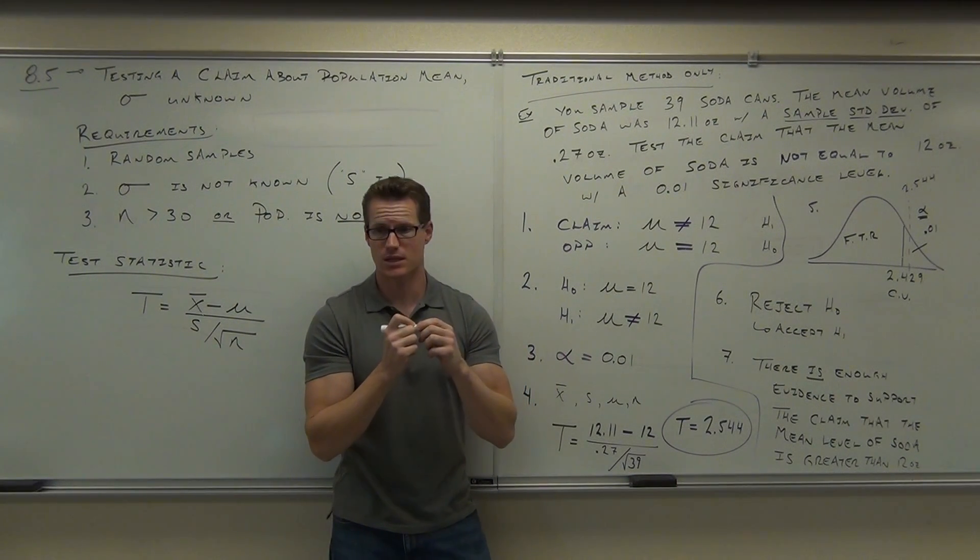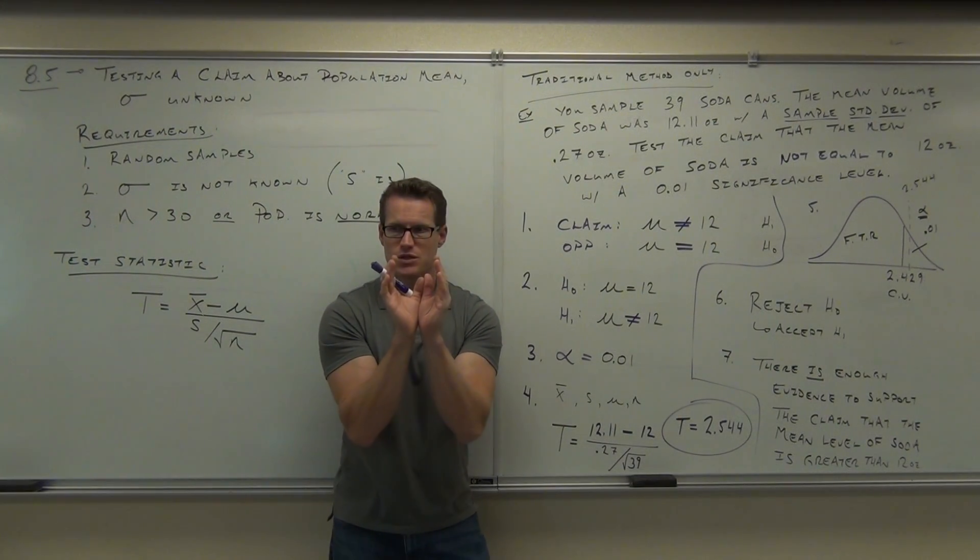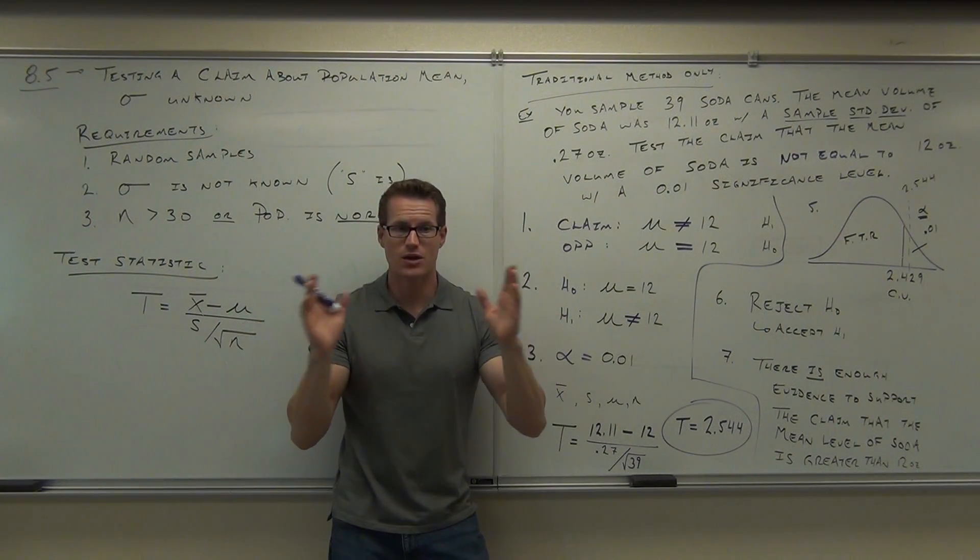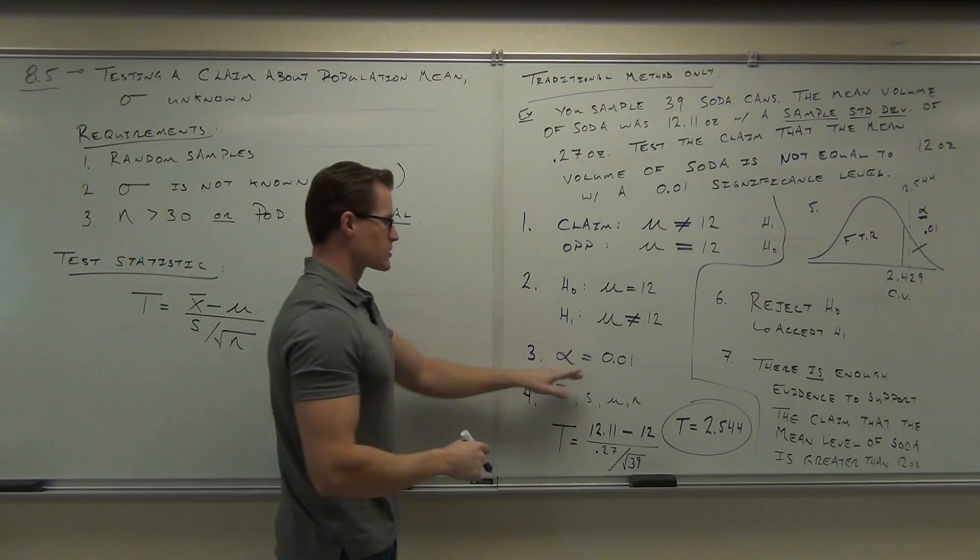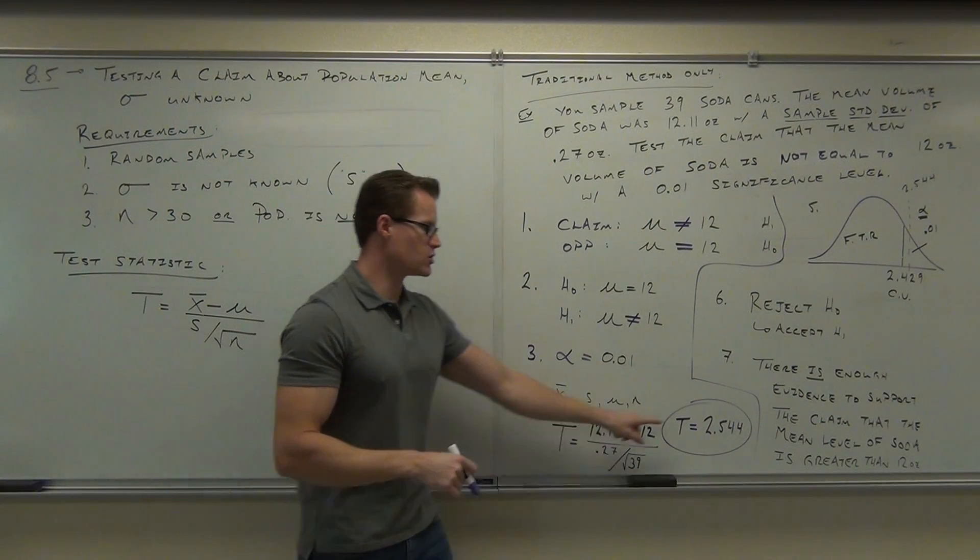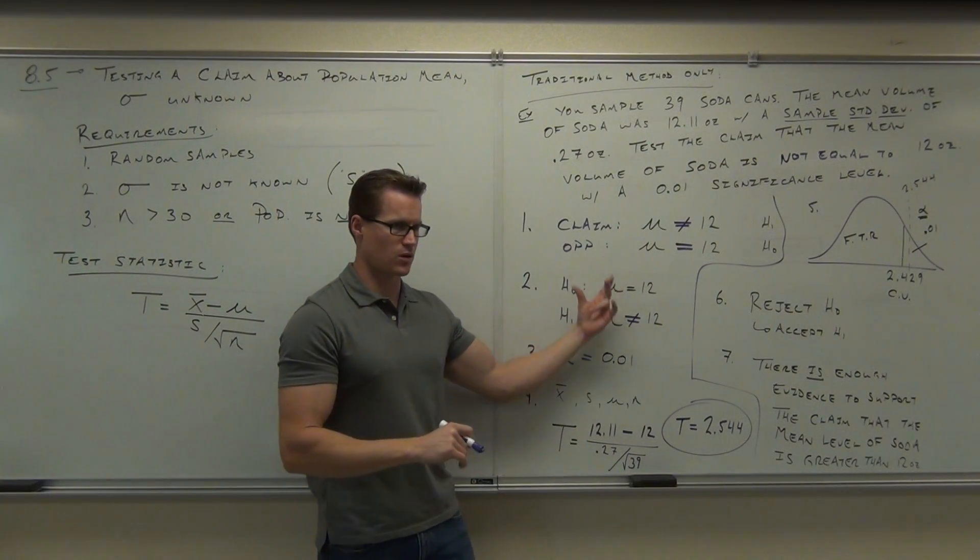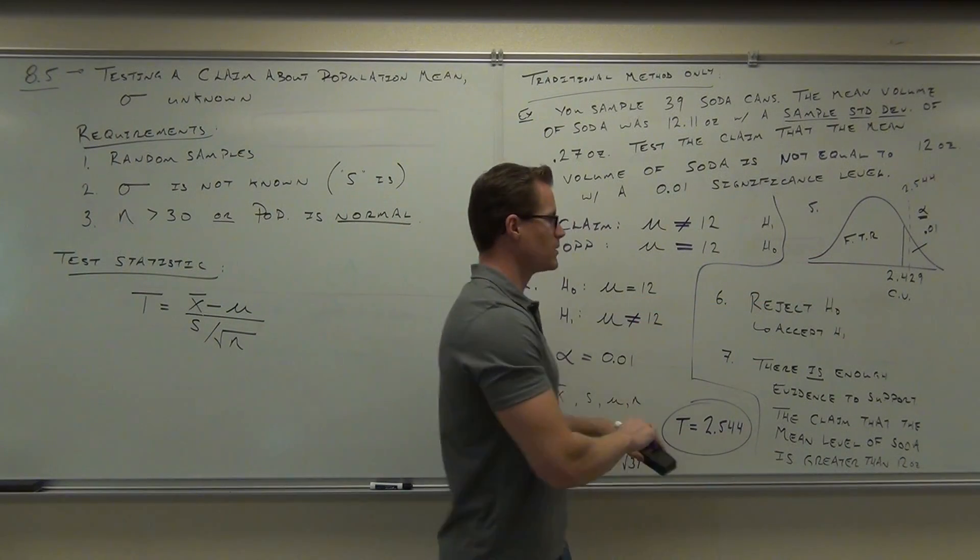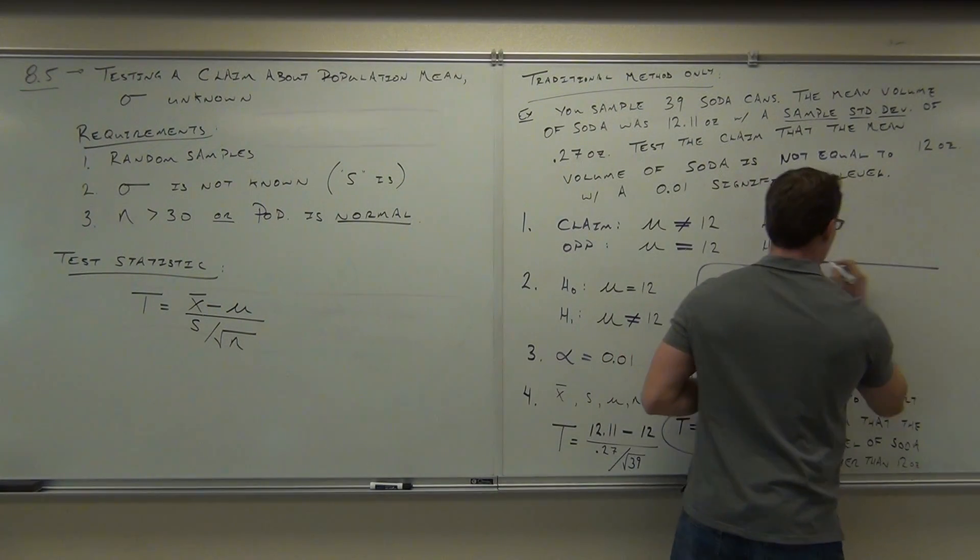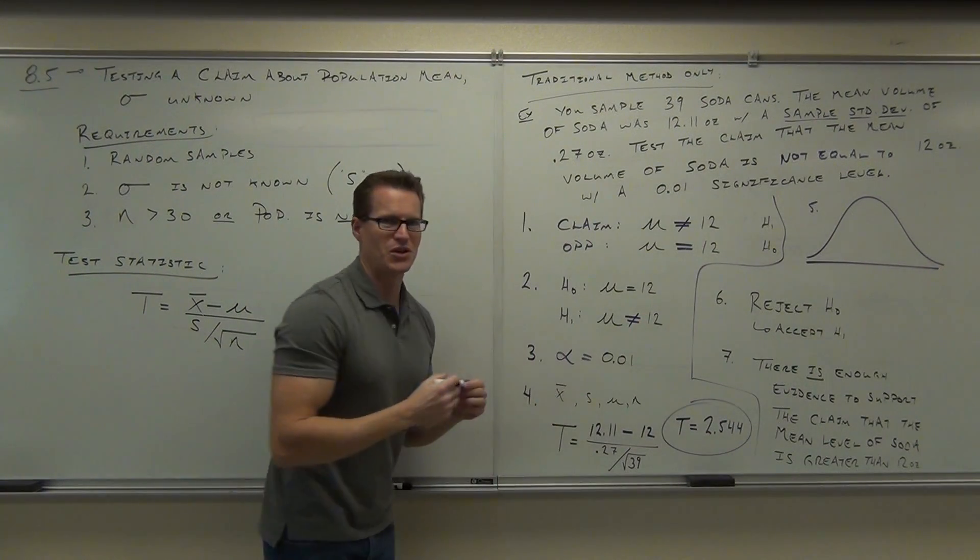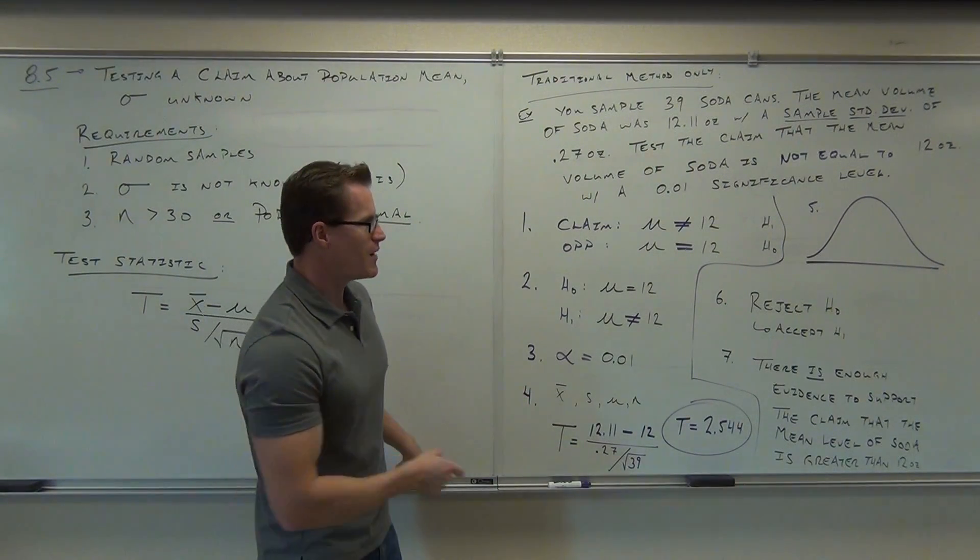That changes the type of test we're doing. Instead of a one tail, a right tail test, we're now going to have a two tail test. So the not equal sign is going to split, and here's what that does. It splits up your significance into two different areas, right? Saying now you have to be further away to prove this null hypothesis wrong. We're going to see how that affects us. Okay. Is our significance level still 0.01? Yes. Is our test statistic still 2.544? Yes. None of that changes. The only thing that really changes here is our claim and opposite, so our null and alternative. But that's going to change our picture dramatically.